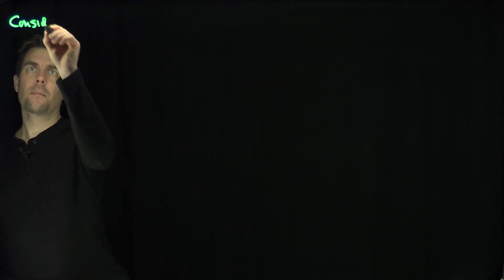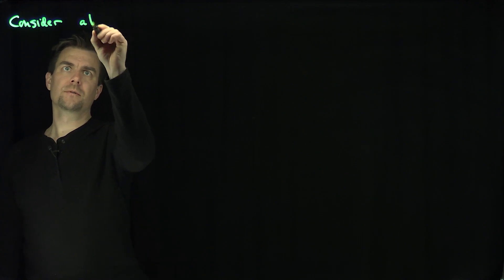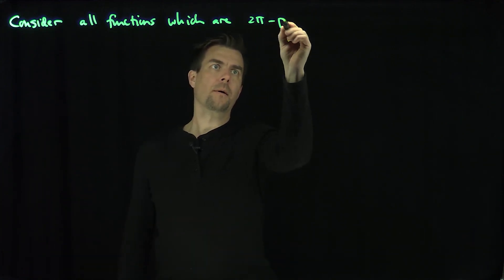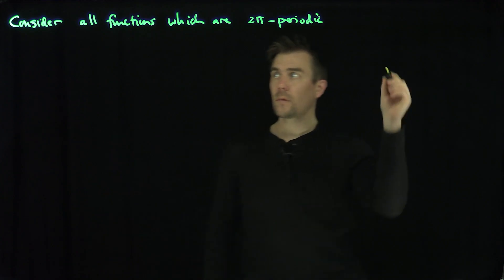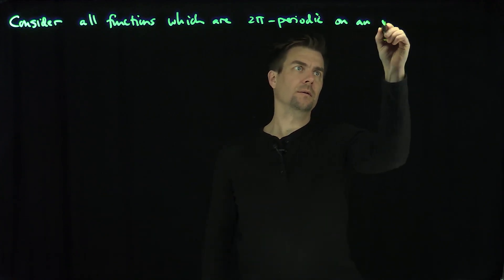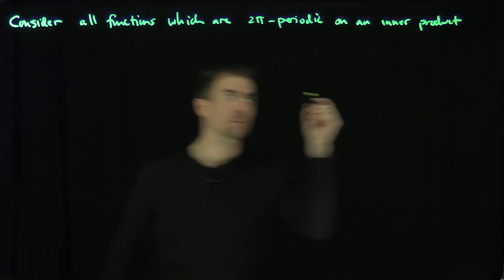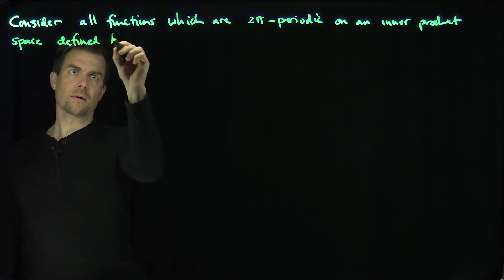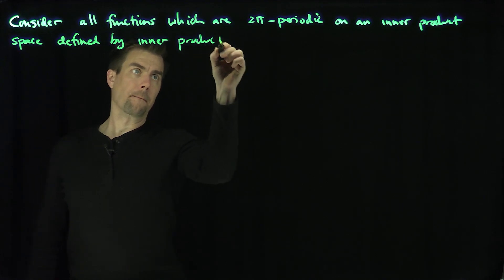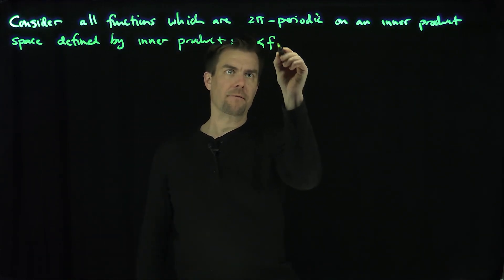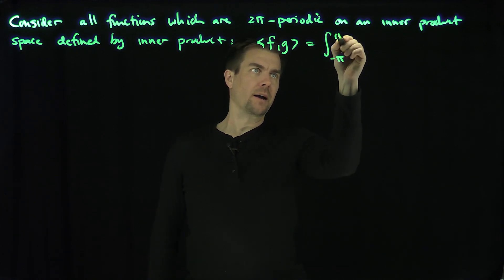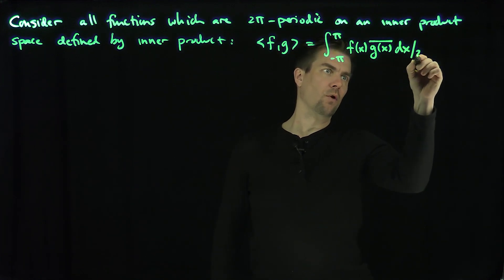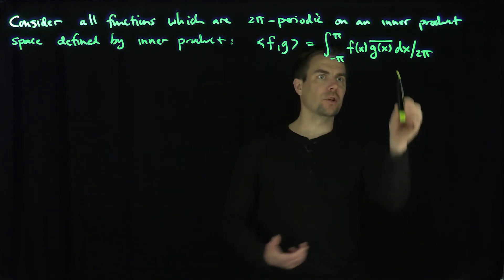Let's consider all functions which are 2π-periodic on an inner product space defined by the inner product of f and g as the integral from negative π to π of f(x) times the complex conjugate of g(x), dx over 2π. So I normalize it — I can use different weights, but I'm just going to use dx over 2π.